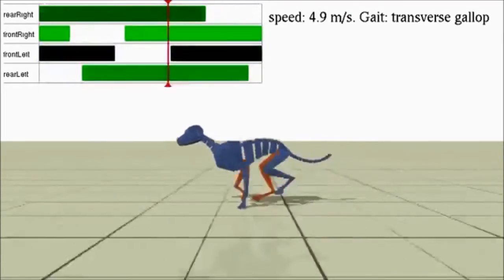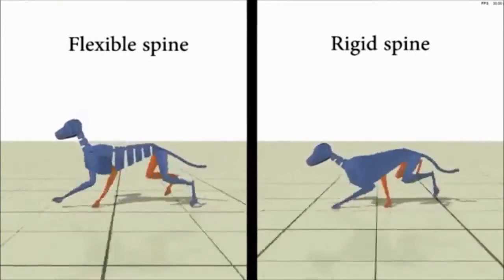Understanding a variety of mammal gaits gives an important benchmark for robot performance. Here we see the influence of a flexible spine on a quadruped gait.